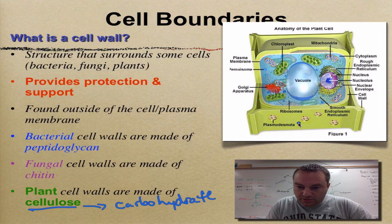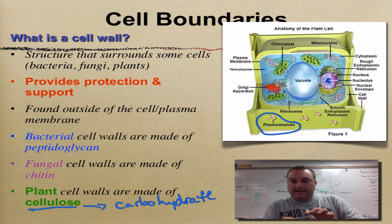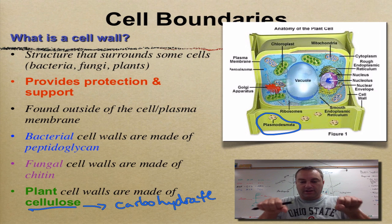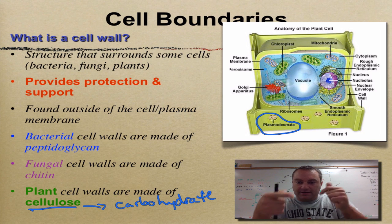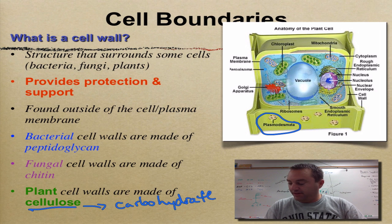So cells have these special structures called plasmodesmata — pretty much a series of holes that allow the cell membrane from one plant cell to fuse with the other. Think of each hand as a plant cell — they've got a connection in there, and that connection is called the plasmodesmata, because their cell walls are very, very thick.